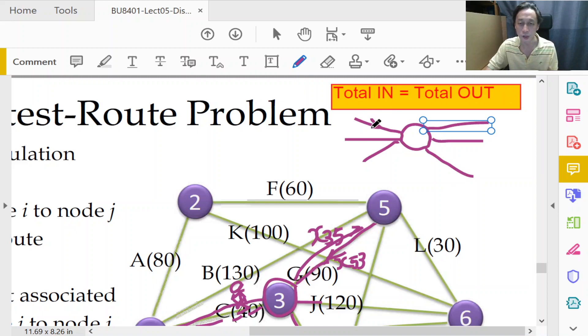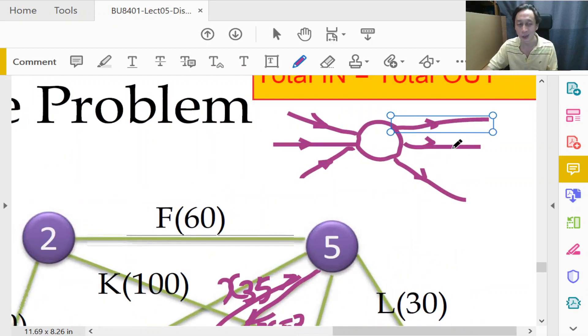Okay, so let's just imagine that they are all directed paths like this. Now remember a node like 3 here is neither a source nor a destination. So, it doesn't have a capacity nor does it have a demand number associated with it.